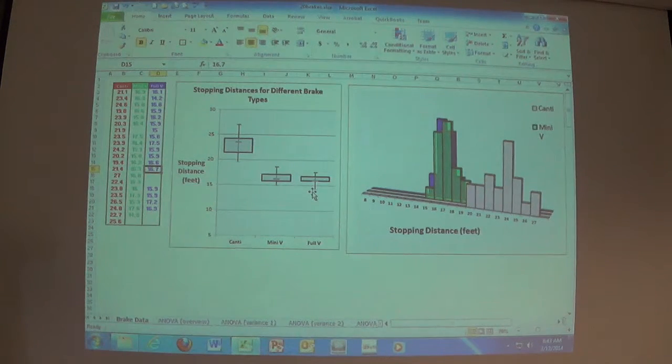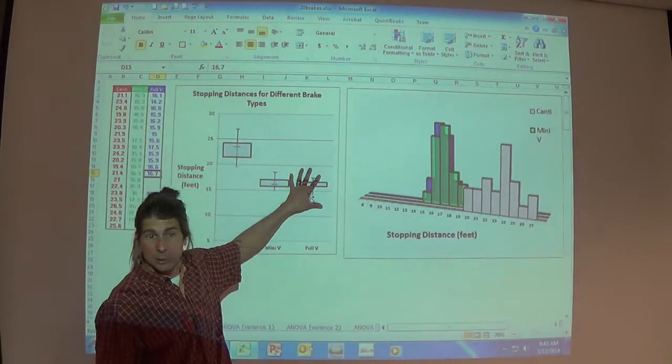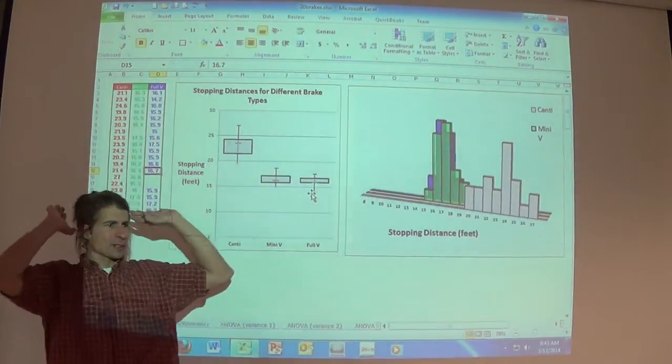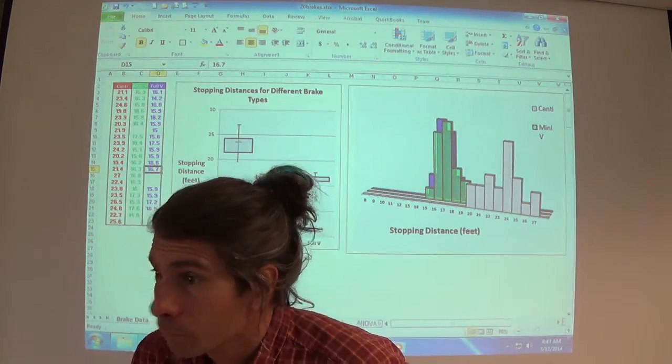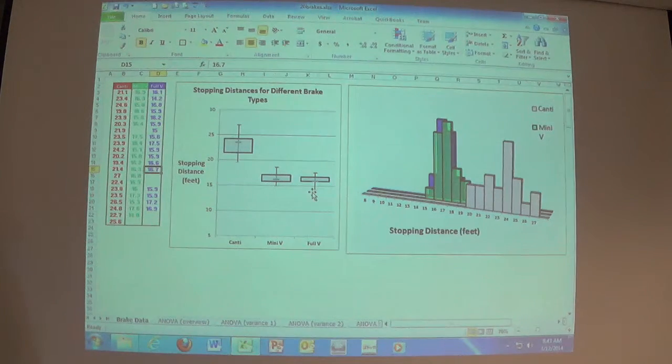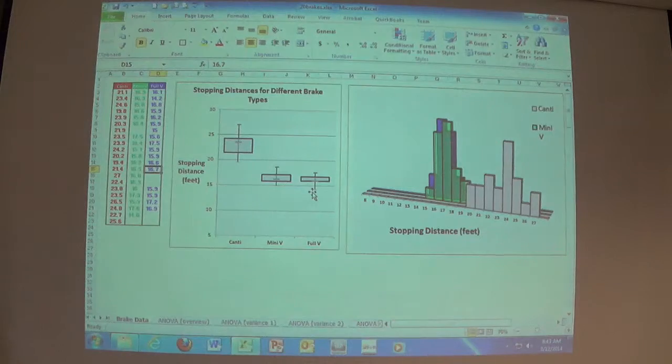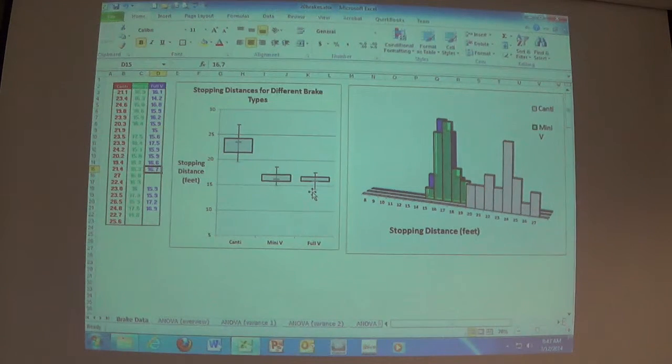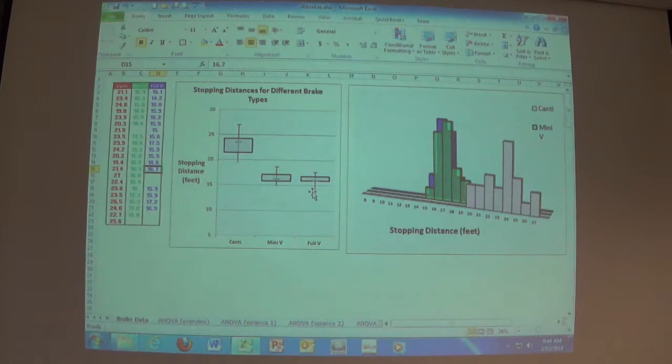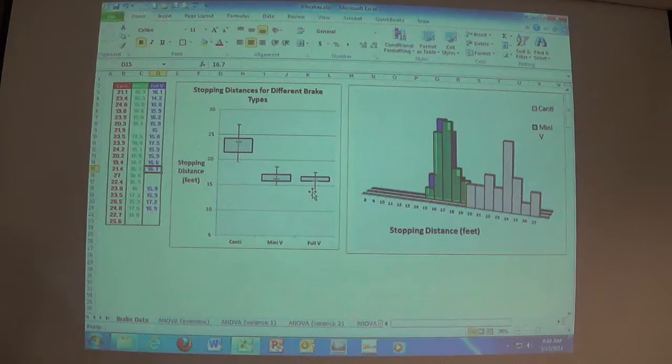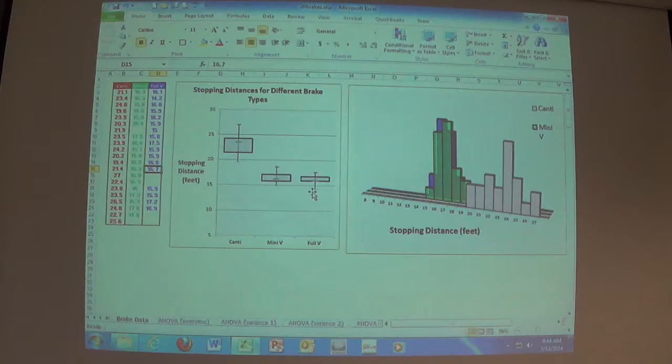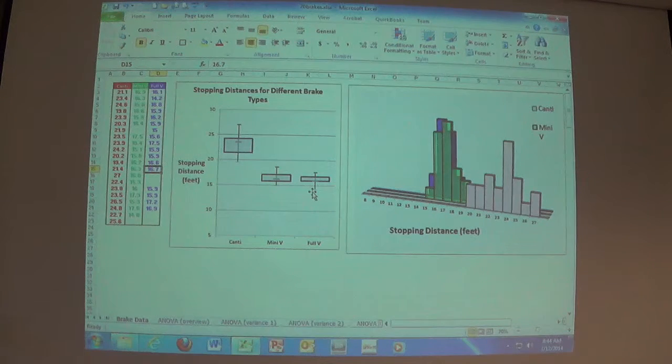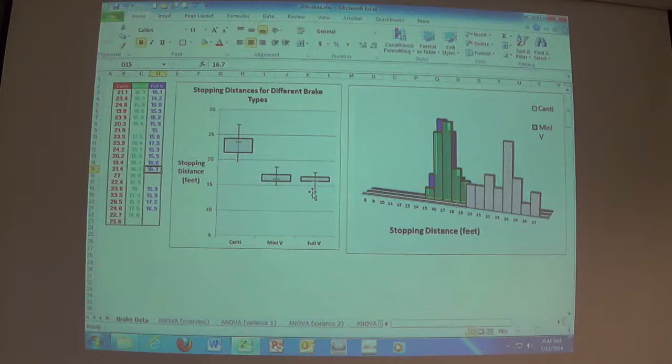I think somebody said type two is much worse because that means you actually would see an advantage of one break over the other, but you wouldn't report on it. A false negative. All the breaks are the same. Remember our null hypothesis? What's the null hypothesis? They're all the same breaking distance. A type two error would be accepting that when you shouldn't, when there is a difference, but you missed it and somebody brought up a very good point and that's a safety issue.